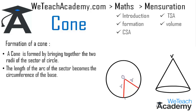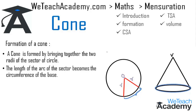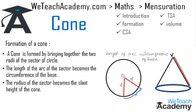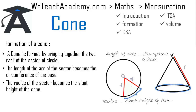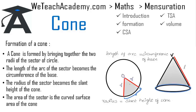The length of the arc of the sector becomes the circumference of the base of the cone. So the length of arc of the sector equals the circumference of the base. The radius of the sector becomes the slant height L of the cone. And the area of the sector is equal to the curved surface area of the cone — remember, the area of the sector equals the lateral surface area or curved surface area of the cone.